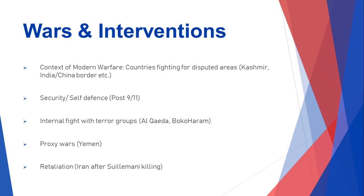Proxy wars are another type of modern warfare — two countries that don't really want to fight each other directly do so through other countries. This happened during the Cold War in Afghanistan where the US funded the Mujahideen to fight Soviet forces. It's also happening in Yemen, where the Saudis are funding government groups and the Iranians are funding rebel groups — Saudi Arabia wants the Sunni government to stay in power while Iran wants the rebels in power. That's basically how most proxy wars are happening across the world currently.